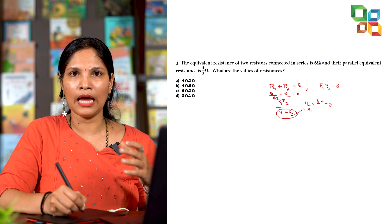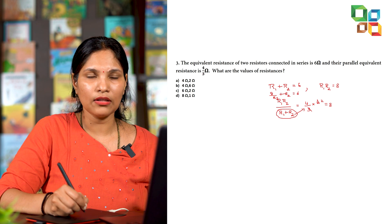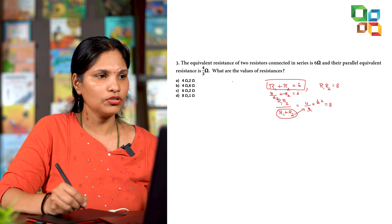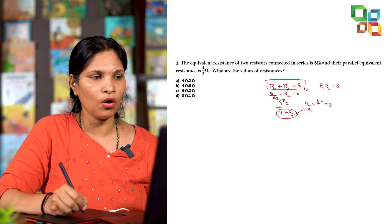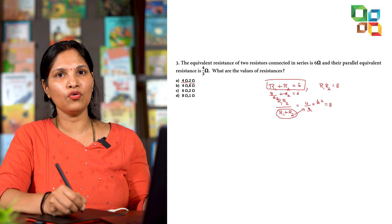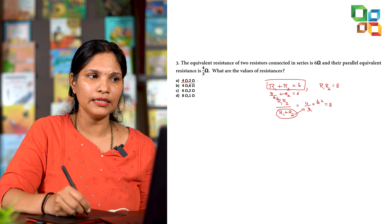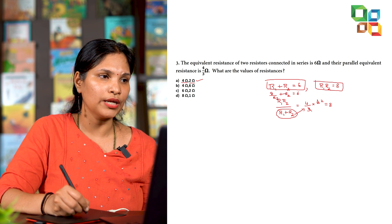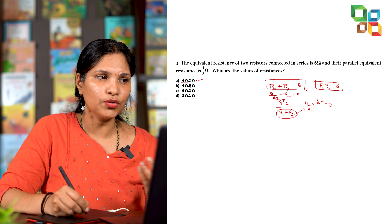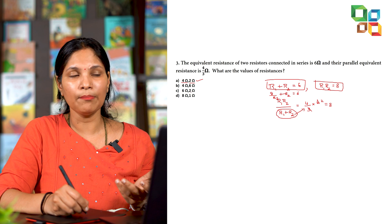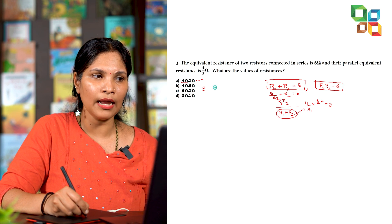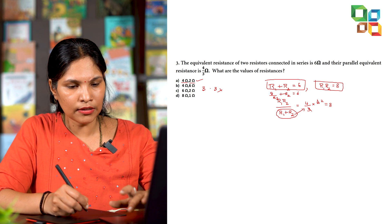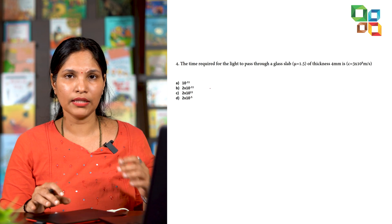Instead, check the options directly. Looking for two values that sum to 6 and multiply to 8: the first option gives R1 = 4 and R2 = 2; 4 + 2 = 6 and 4 × 2 = 8, so that's the answer. Checking other options — for example, 3 and 3 gives a sum of 6 but a product of 9, not 8 — confirms option one is correct.